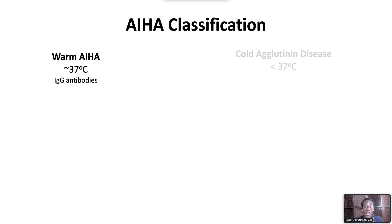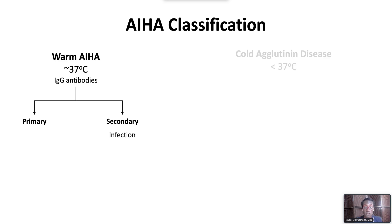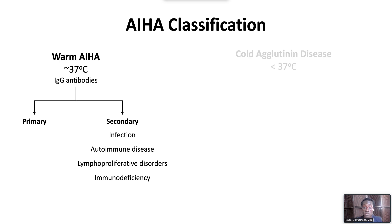About 40% of cases are primary or idiopathic, while up to 60% of cases are secondary — that is, associated with an underlying condition — including infection, autoimmune disease, lymphoproliferative disorders, and immunodeficiency.